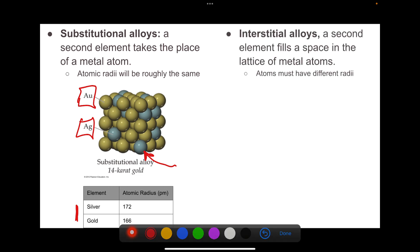You can juxtapose this to an interstitial alloy. This is an alloy where the second element fills the space in between the metal atoms of the lattice. In order to do this, the atoms must have very different radii.